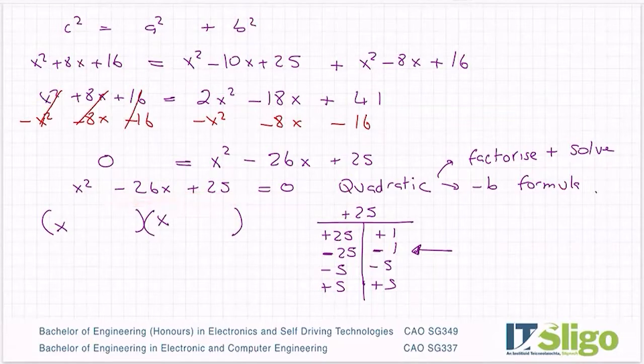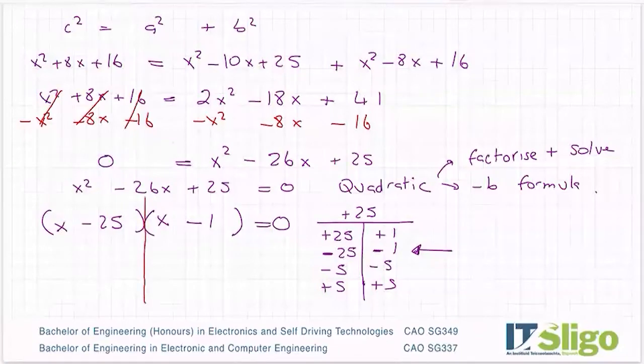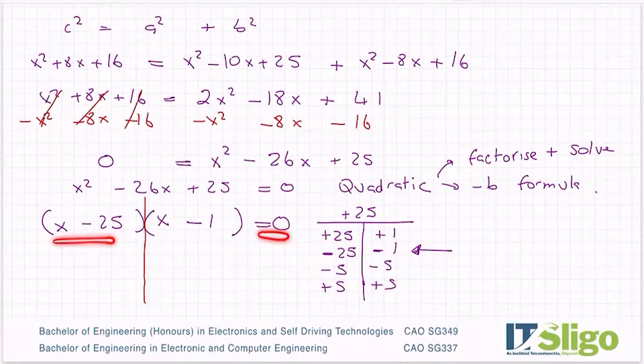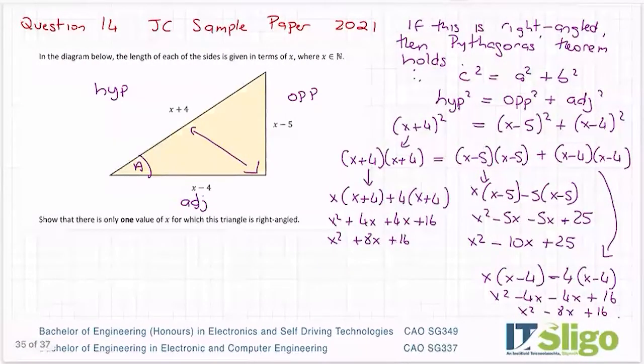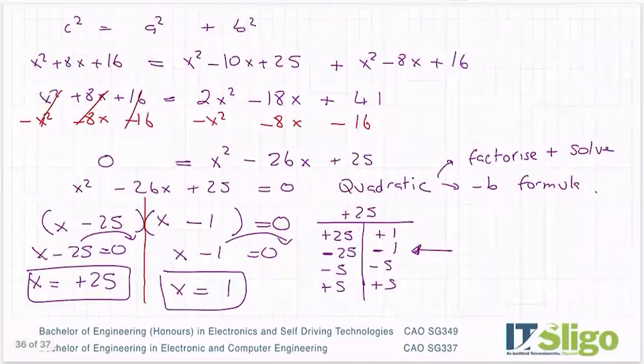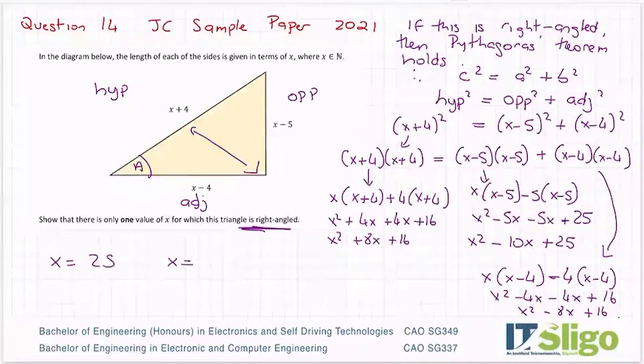So then to solve, you split each bracket and you let each one equals to 0 and you solve it. So x - 25 = 0, bring him over or plus 25 to both sides, where x is equal to 1. Okay, so I got two answers. So I got x = 25 and x = 1.